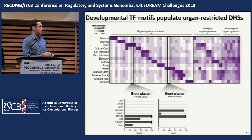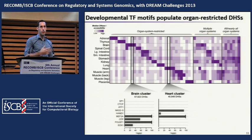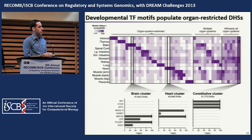Switching to the heart cluster, MEF2A is also involved in heart development and its recognition sequence is highly enriched there, as are the sequences for NKX2-5 and HAND1, which when knocked out in mice cause the mice not to develop a heart. Finally, in the constitutively active DHS cluster, there is enrichment for recognition sequences of general transcription factors such as SP1 and CTCF, which broadly bind promoter elements.